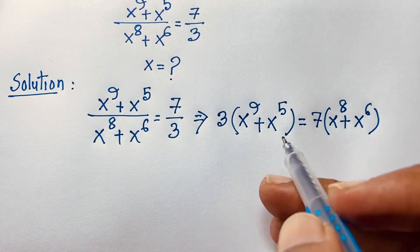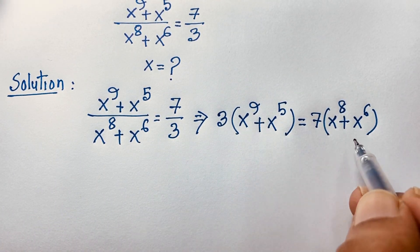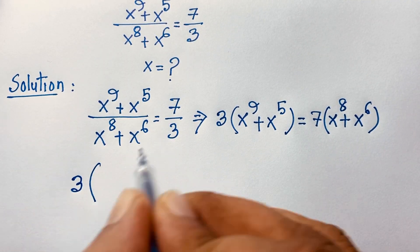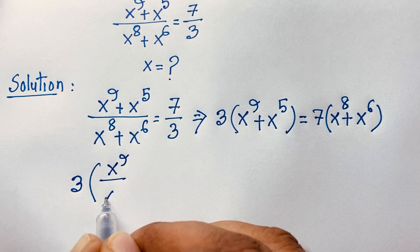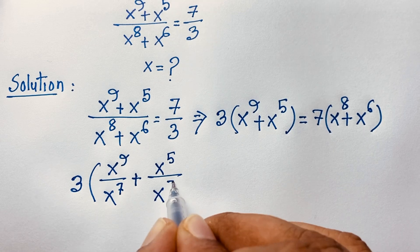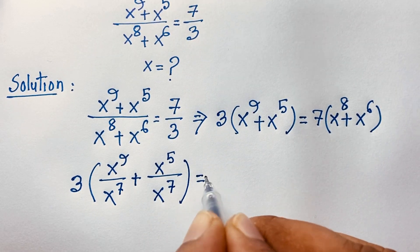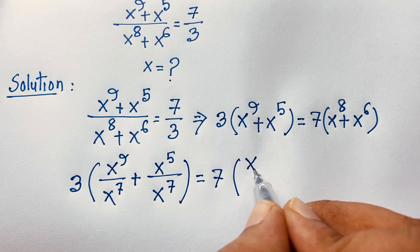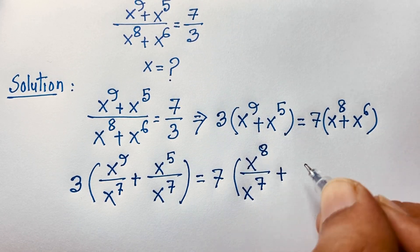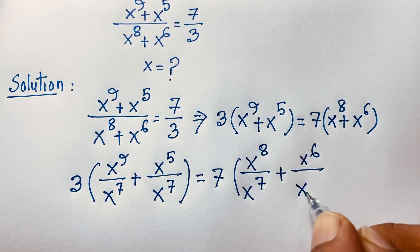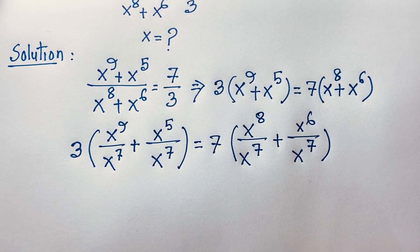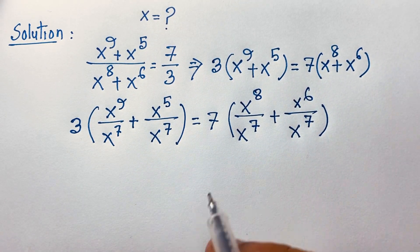Now I divide both sides by x to the power 7. So the expression becomes: 3 times x to the power 9 divided by x to the power 7, plus x to the power 5 divided by x to the power 7, is equal to 7 times x to the power 8 over x to the power 7, plus x to the power 6 over x to the power 7.